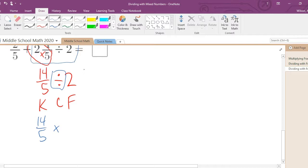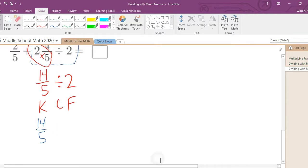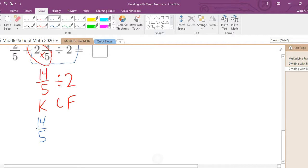Remember, keep, change, flip. You keep the first fraction the same. So we leave that alone as fourteen fifths. We have to change the division sign into its inverse, otherwise known as multiplication. The opposite of division is multiplication.